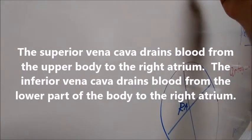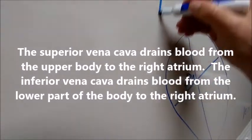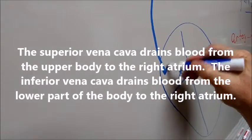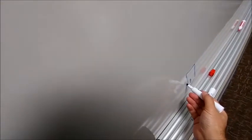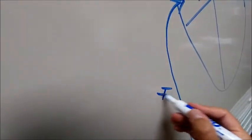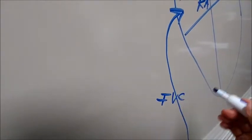And let's say that blood from the superior vena cava goes to the right atrium. That's going to be the superior vena cava. And then blood from the inferior vena cava goes also to the right atrium.